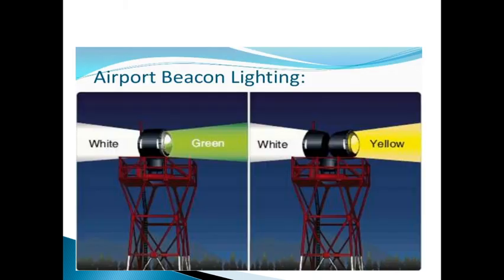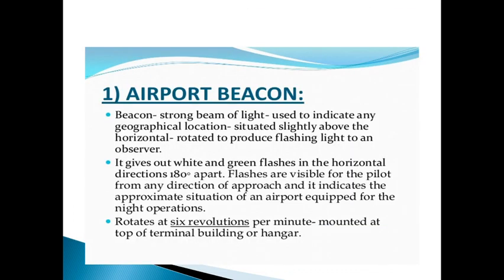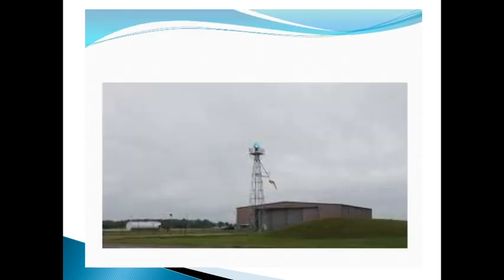The first type is the airport beacon. This is a beacon that continuously rotates, emitting green, white, and yellow lights. It produces a very strong beam of light used to indicate the geographical location of the airport. It is situated well above the horizontal level, and it rotates at about six revolutions per minute, making it visible from a long distance.